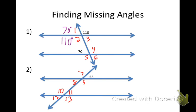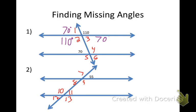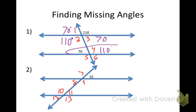How can I figure out angle three? Why is that one 70 degrees? Vertical angles again. I can start filling in these answers. What about angle four? Why is it 110? Because it's parallel — I could say corresponding angles here, or I could say a linear pair since they make a line.